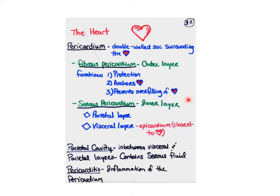Underneath that fibrous pericardium is what we call the serous pericardium — that's the inner layer. The outer layer which underlies the fibrous pericardium is called the parietal layer, and then inside of that is the visceral layer. In between these two layers is the fluid that gives cushion and also helps to allow the heart to expand.